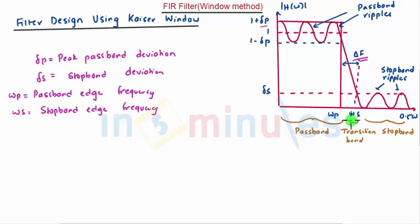There is a term delta F. Delta F is the transition bandwidth, given as delta F equals omega S, the stopband edge frequency, minus the passband edge frequency divided by 2 pi.